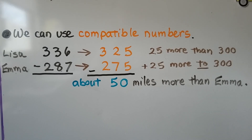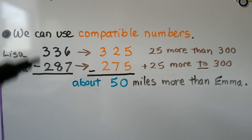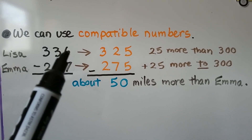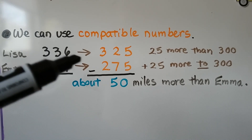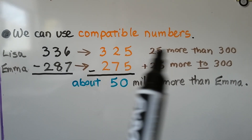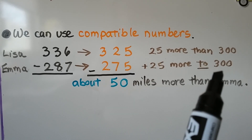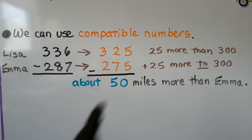We can use compatible numbers. Lisa drove 336 and Emma drove 287. We need to find the difference, so it's a subtraction problem. 325 is close to 336, and 275 is close to 287. We could say 325 minus 275. 325 is 25 more than 300, and 275 is 25 less than 300, so the difference would be about 50 miles more than Emma that Lisa drove.